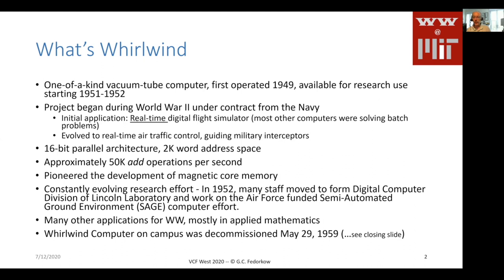The project was a research project and was continually evolving. By 1952, many of the staff members had moved from the original Whirlwind development on to an Air Force-funded contract, which ultimately became SAGE — the Semi-Automated Ground Environment air defense network. While the machine was at MIT, there were many other applications that ran on it, many in the broad field of applied mathematics. The machine ran for about a decade and was decommissioned in the spring of 1959.